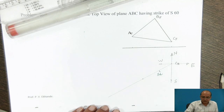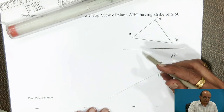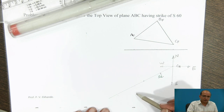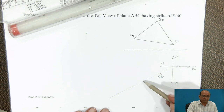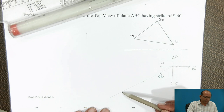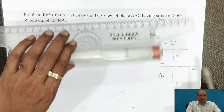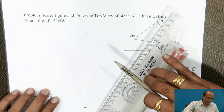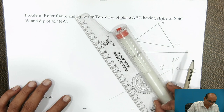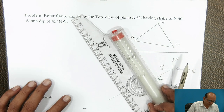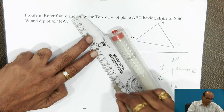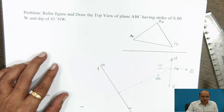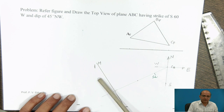The strike line is the bearing of the horizontal line from the plane. We must take a plane perpendicular to this strike line to obtain the edge view. This perpendicular plane is taken at a slightly larger distance so that the projection of point A will fall within this area. This perpendicular reference line is indicated as H1 — the intersection of the horizontal plane and auxiliary plane number 1.